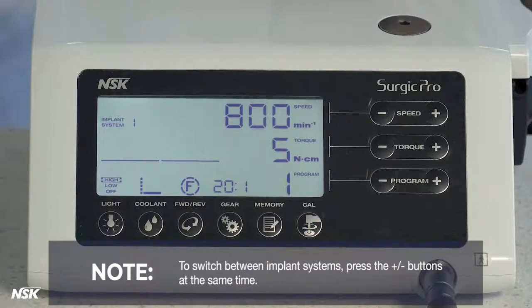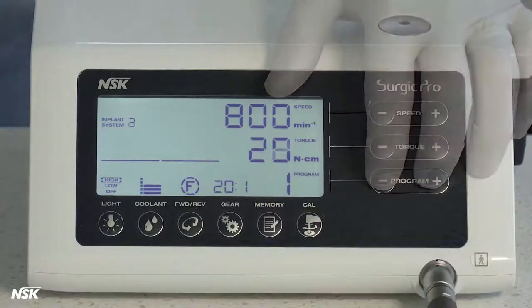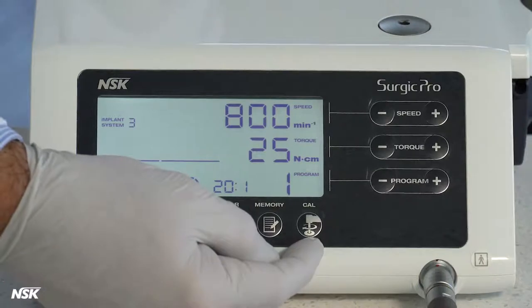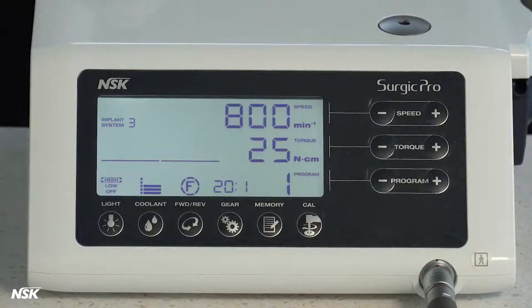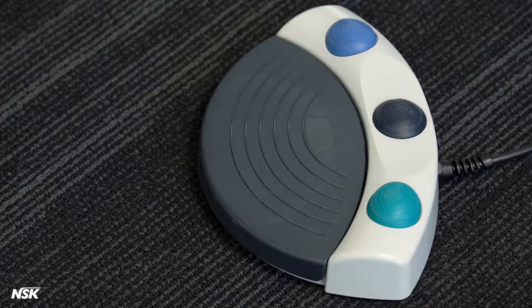To switch between implant systems, press the plus or minus buttons at the same time. The Cal button is used to calibrate a new attachment. There will be more on this in the calibration section later in this video. Your Surgic Pro can also be controlled by the included foot control to avoid touching the panel during a procedure.